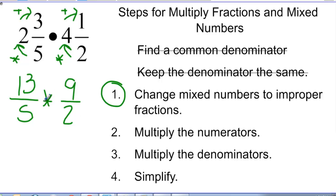So now I do not have to find a common denominator. I just need to multiply the numerators, multiply the denominators, and simplify. So 13 times 9 is going to give me 117, and 5 times 2 is going to give me 10. And so now I just need to simplify. And so that is going to be 10 goes into 117, 11 times with 7 tenths left over. So that 7 tenths is in simplest form. It is already simplified, so I don't have to do anything else.